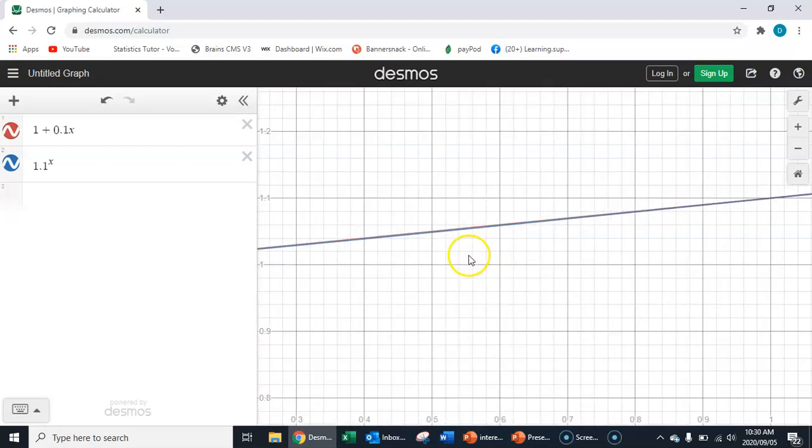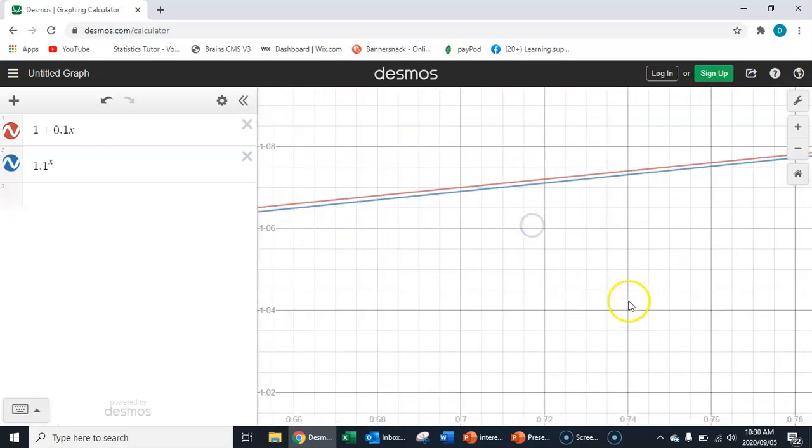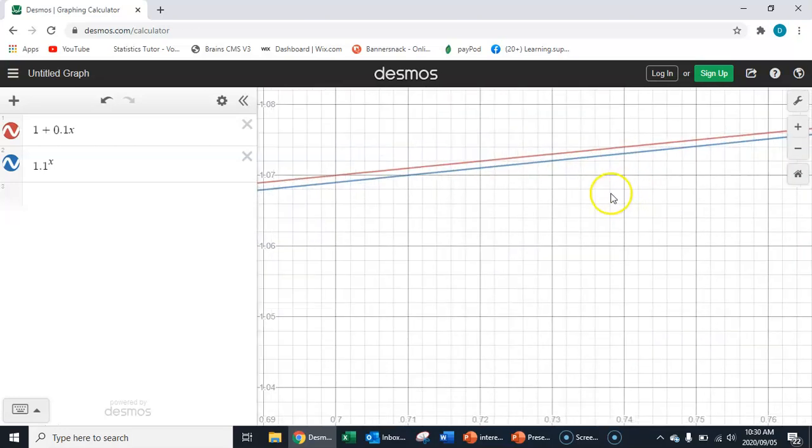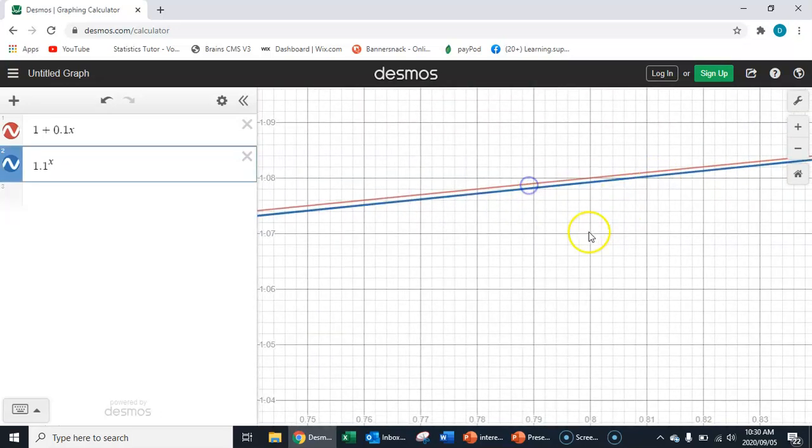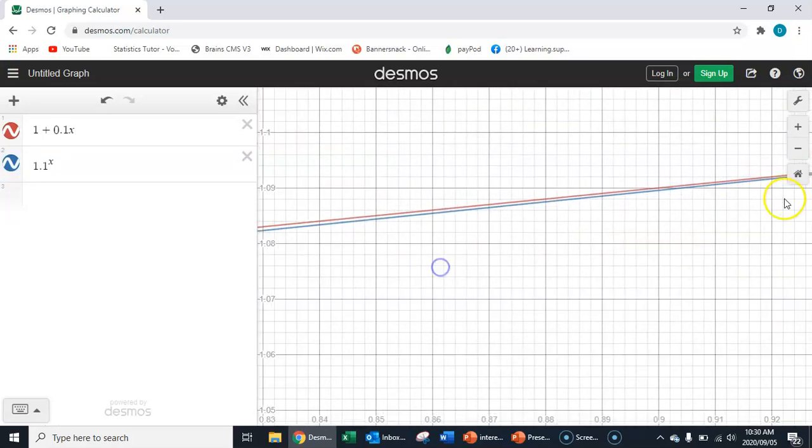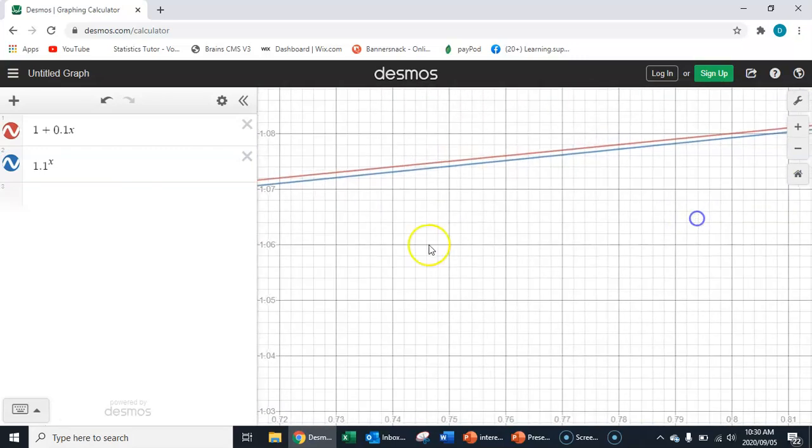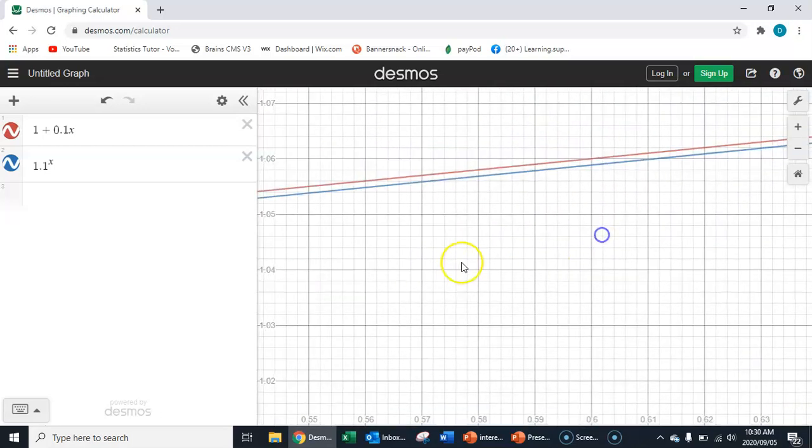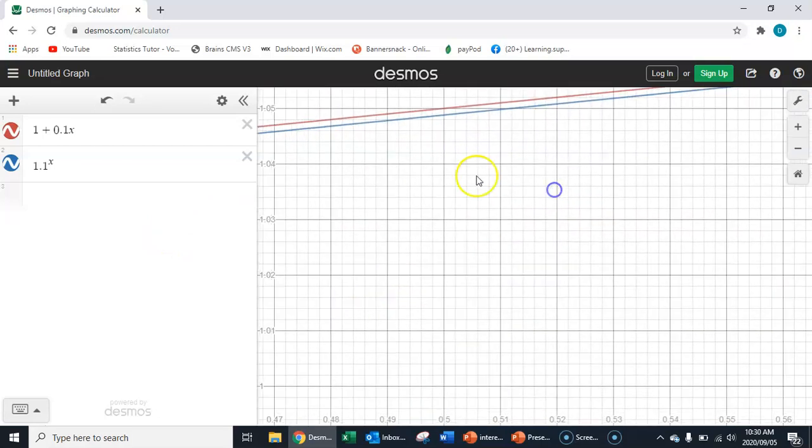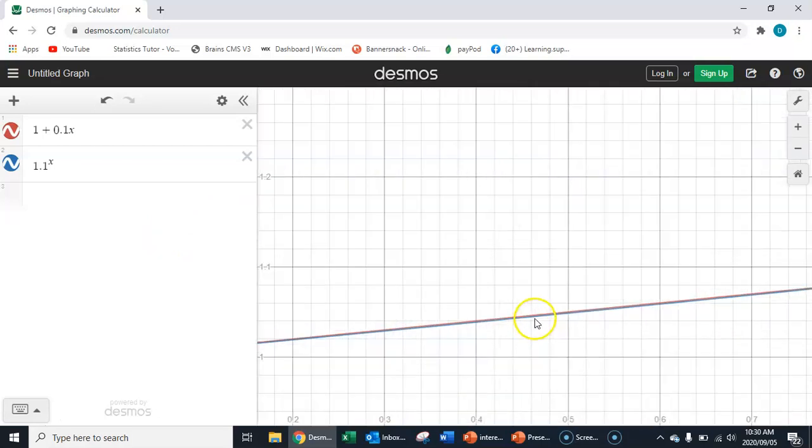But if we carry on zooming in, look what we actually find. So now we're between zero and one here, the red line is actually above the blue line. So that means that simple interest for anything between zero and one is actually going to get you more return on investment than compound interest. So you see, you need to actually have a look at this very carefully. You see the red line is now above the blue line.